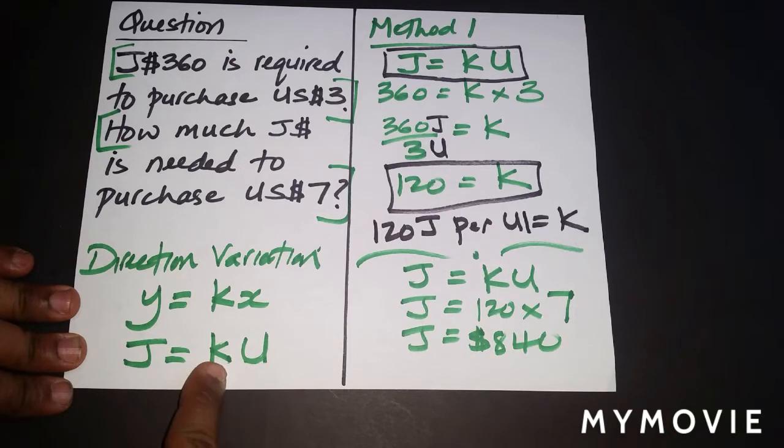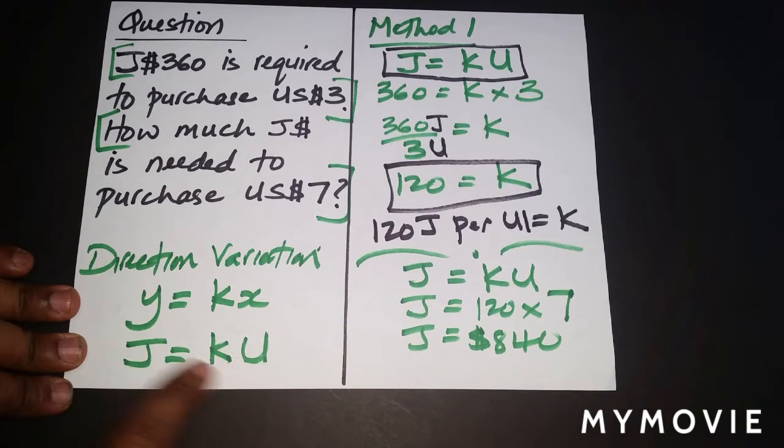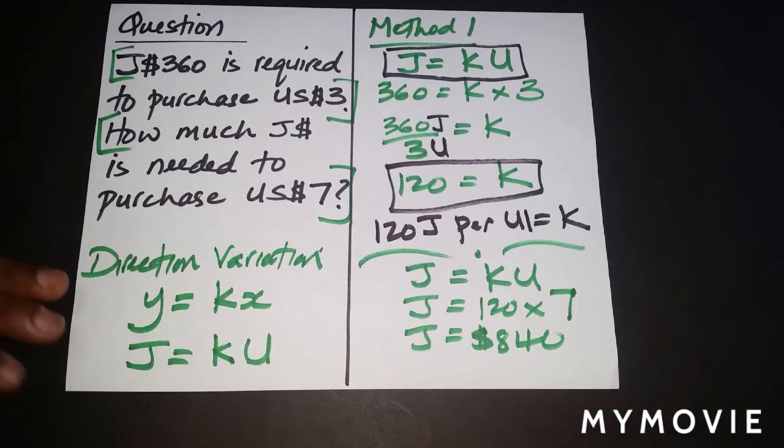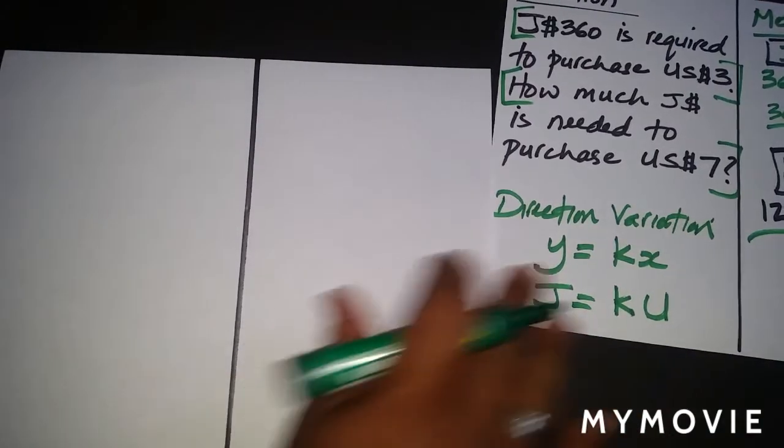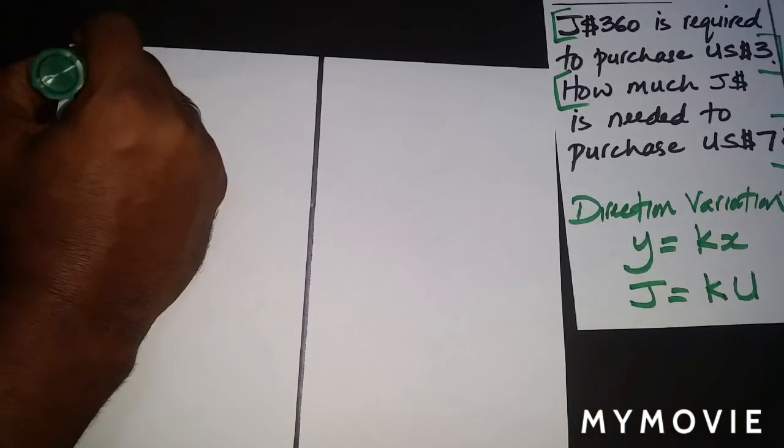Once you work it out correctly, you're going to get the final answer, which is 840 in the other part. So let's take a look at that. Method 2, we're going to be looking at Method 2 here.